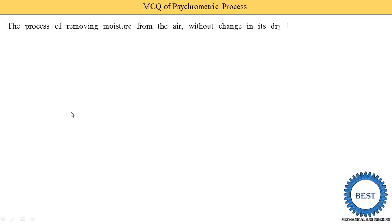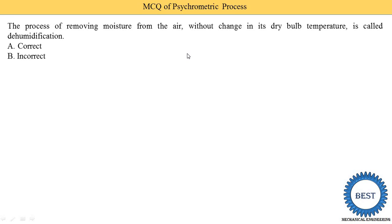The process of removing moisture from the air without change in dry bulb temperature is called the dehumidification process — this statement is correct. Similarly, the process of adding moisture to the air without change in dry bulb temperature is called humidification. In exams, they may swap the definitions, giving wrong statements. For example: 'removing moisture is called humidification' — that is wrong. You need to remember the definitions of all processes.